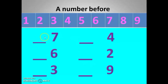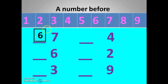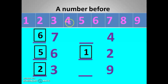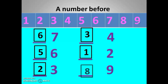Now next, the before number — you have to write it. Seven is given — what is before seven? It is six. What is before two? One. Before three? Two. Before six? Five. Before four? Three. Before nine? Eight. Practice like this: before 7 is 6, before 6 is 5, before 3 is 2, before 4 is 3, before 2 is 1, before 9 is 8.